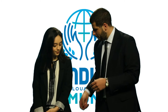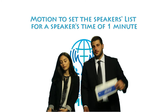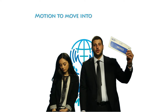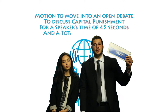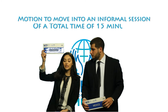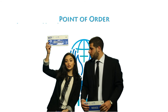Motion to set the speaker's list for a speaker's time of one minute. Point of parliamentary procedure: how do we make a motion? Motion to move into an open debate to discuss capital punishment for a speaker's time of 45 seconds and a total time of 8 minutes. Motion to move into an informal session of a total time of 15 minutes. Point of personal privilege: may I be excused? Point of order: Germany hasn't been added to the speaker's list. Motion to adjourn the session.